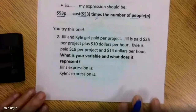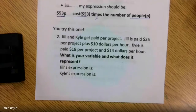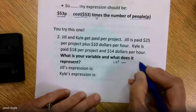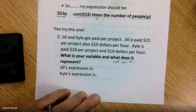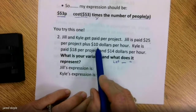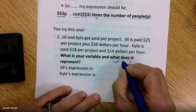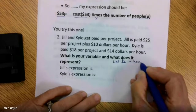Let's try this one — it's two of them in one. Jill and Kyle get paid per project. Jill is paid $25 per project plus $10 per hour. Kyle is paid $18 per project and $14 per hour. What is your variable and what does it represent? We call it a let statement. Do we know how much she gets paid per project? Yes. Do we know how many dollars she makes per hour? Yes. Do we know how many hours she'll work? No. So I'm giving it the letter H because that's my unknown and it represents hours.